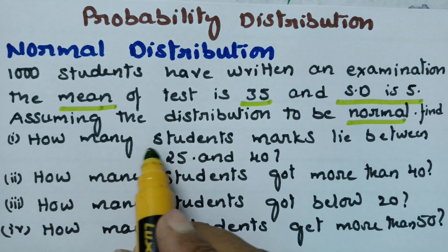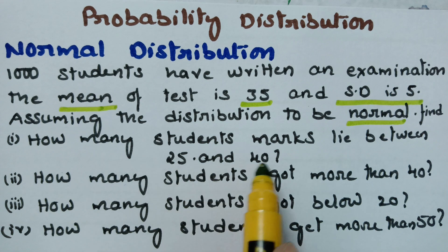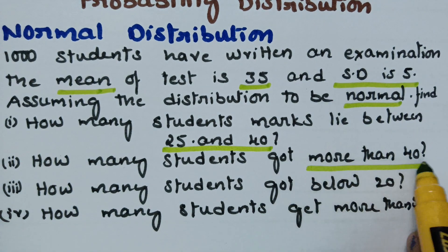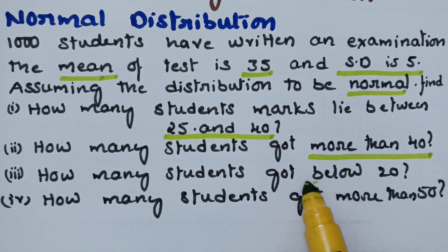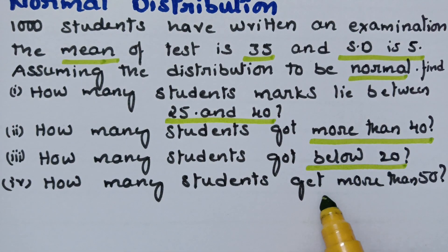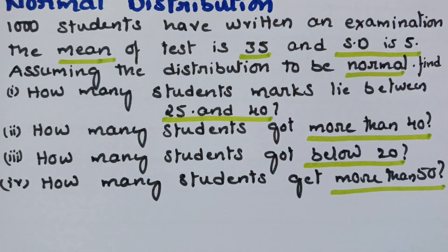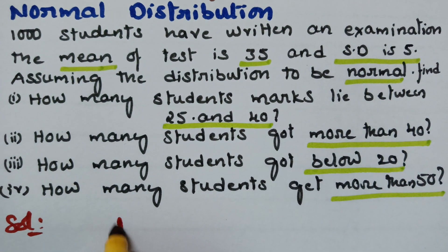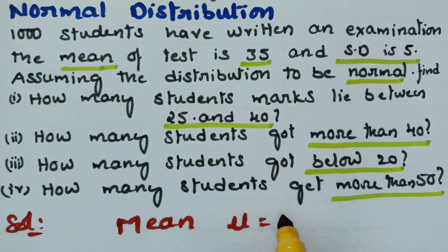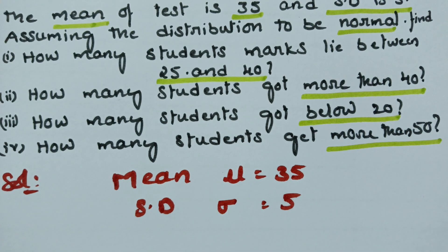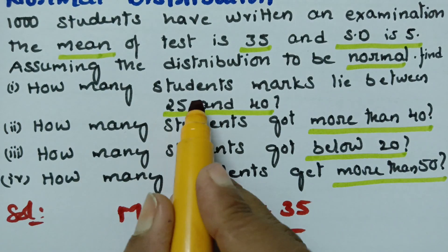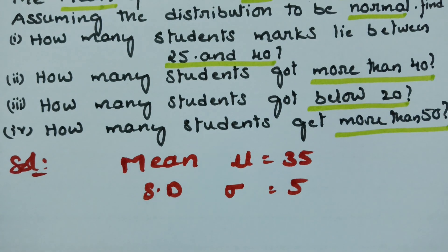There are four questions: first, find how many students' marks lie between 25 and 40; next, how many students got more than 40; how many students got below 20; and how many students got more than 50. The mean mu is given as 35 and standard deviation sigma is given as 5.